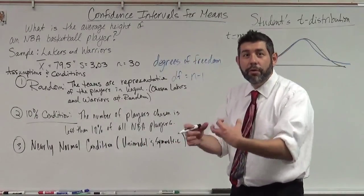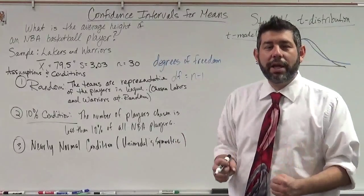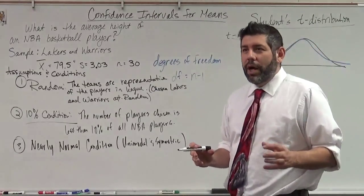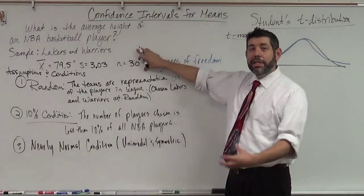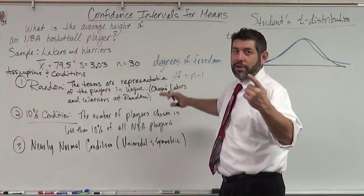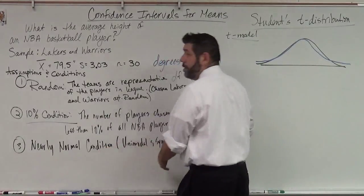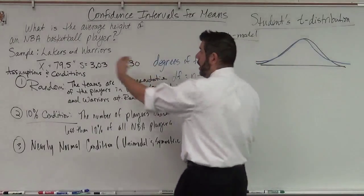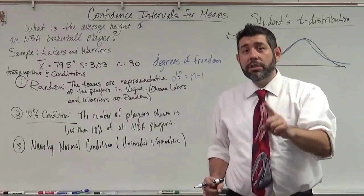It doesn't have to be perfect — nothing in stats is ever perfect — it just has to be close. We're going to need to know what the data look like and the distribution of the data. I already checked and it turned out to be unimodal and symmetric. So we say: the distribution of heights for the Lakers and the Warriors is unimodal and symmetric. Now we can use our t-model.